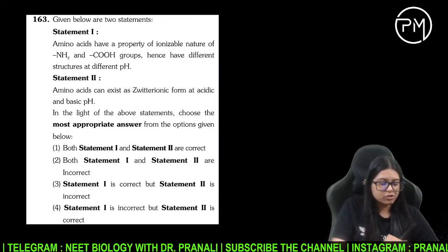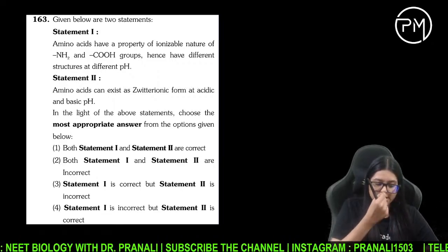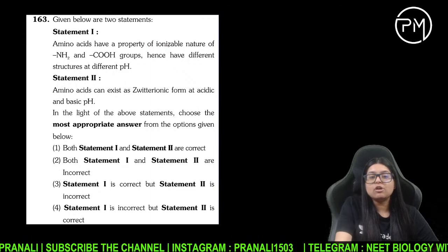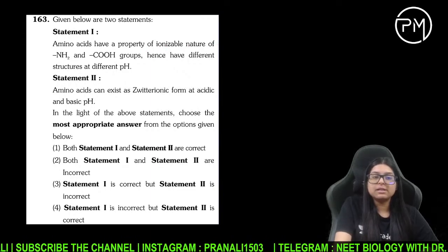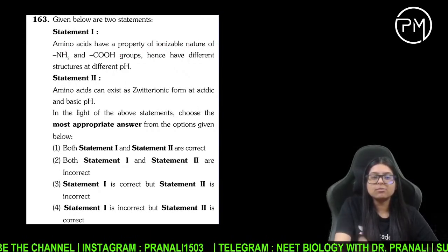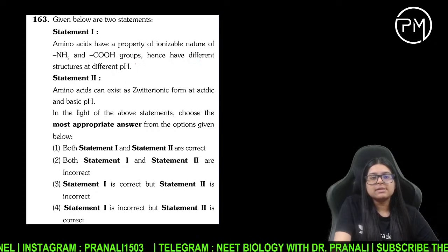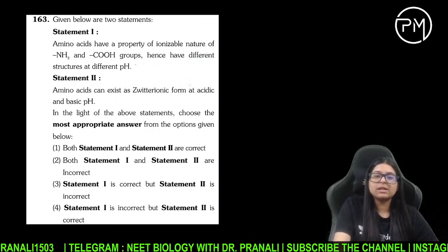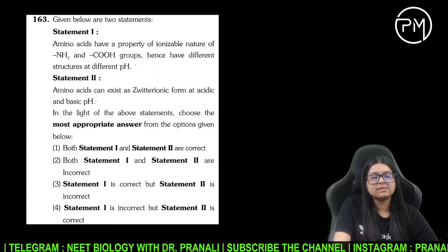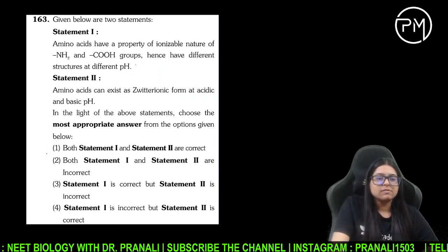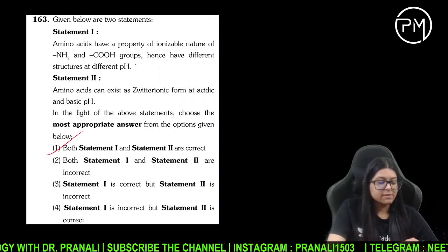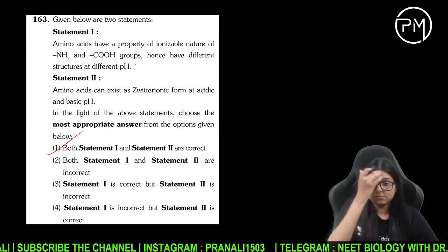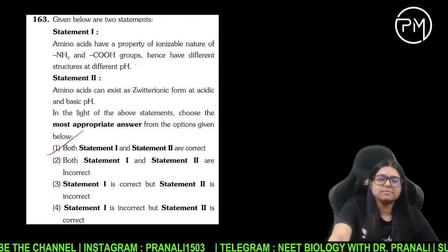Do statements aage waale: amino acids have a property of ionizable nature — sahi baat, amino group hai, carboxyl group hai, isliye different structure at different pH. Amino acid zwitterion ke form mein hota hai. Sahi baat hai. 163 ka answer 1 ho jayega — zwitterion ke form mein rehta hai.